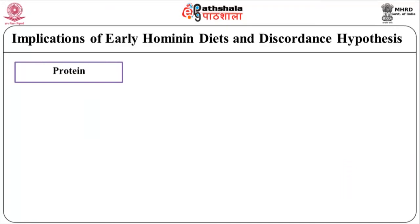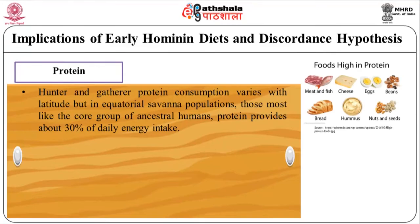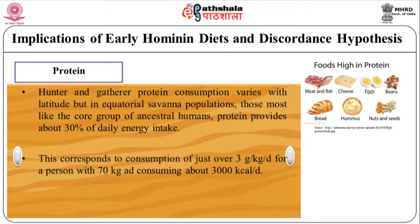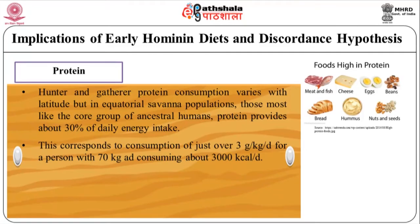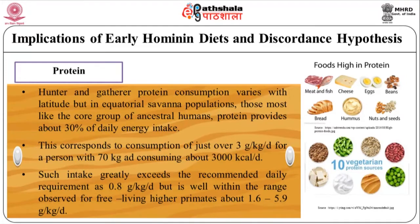Regarding proteins: hunter-gatherer protein consumption varies with latitude, but in equatorial savannah populations — those most like the core group of ancestral humans — protein provides about 30% of daily energy intake. This corresponds to consumption of just over 3 g per kg per day for a person of 70 kg consuming about 3,000 kcal per day. Such intake greatly exceeds the recommended daily requirement of 0.8 g per day, but is well within the range observed for other higher primates — about 1.6 to 5.9 g per kg per day.